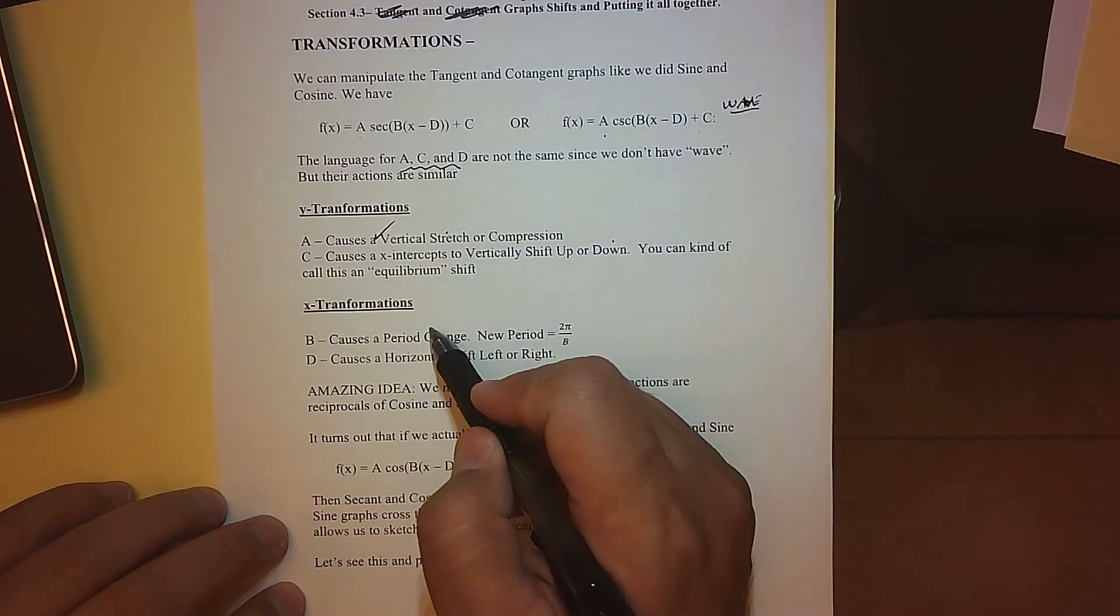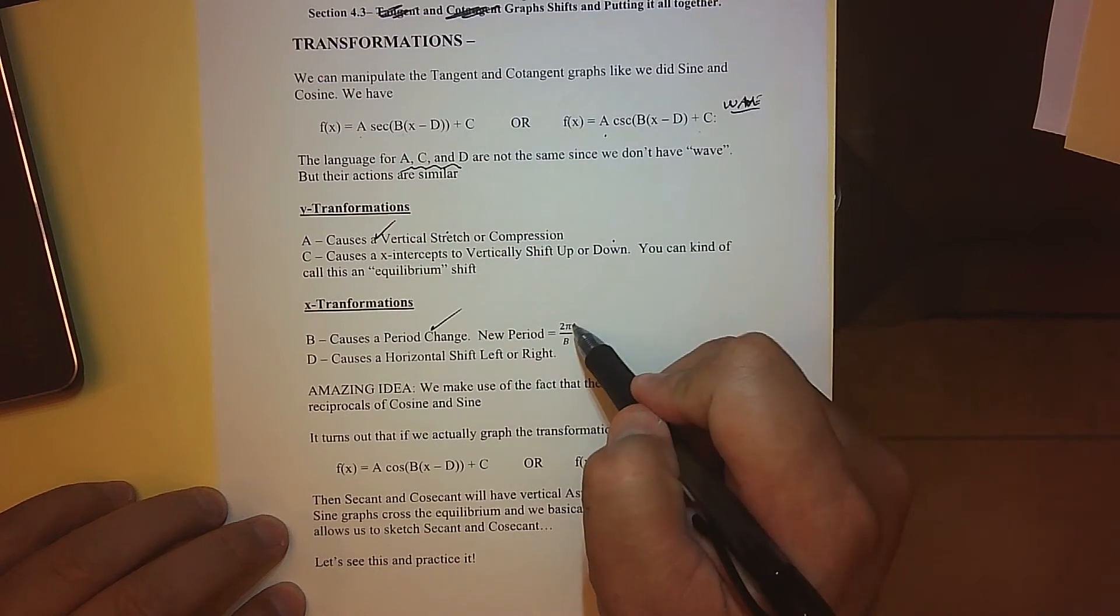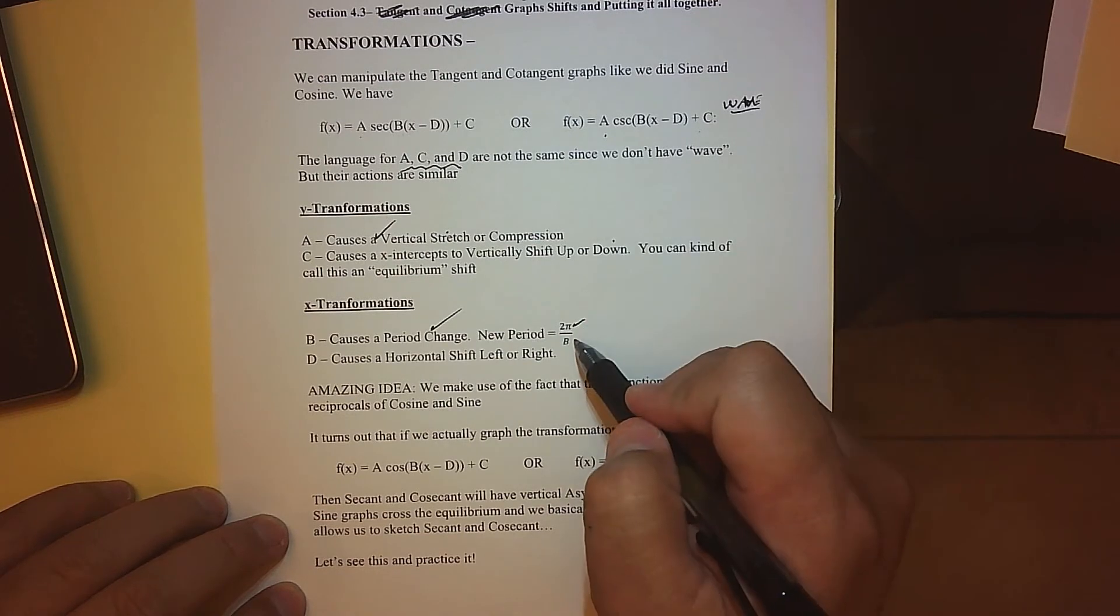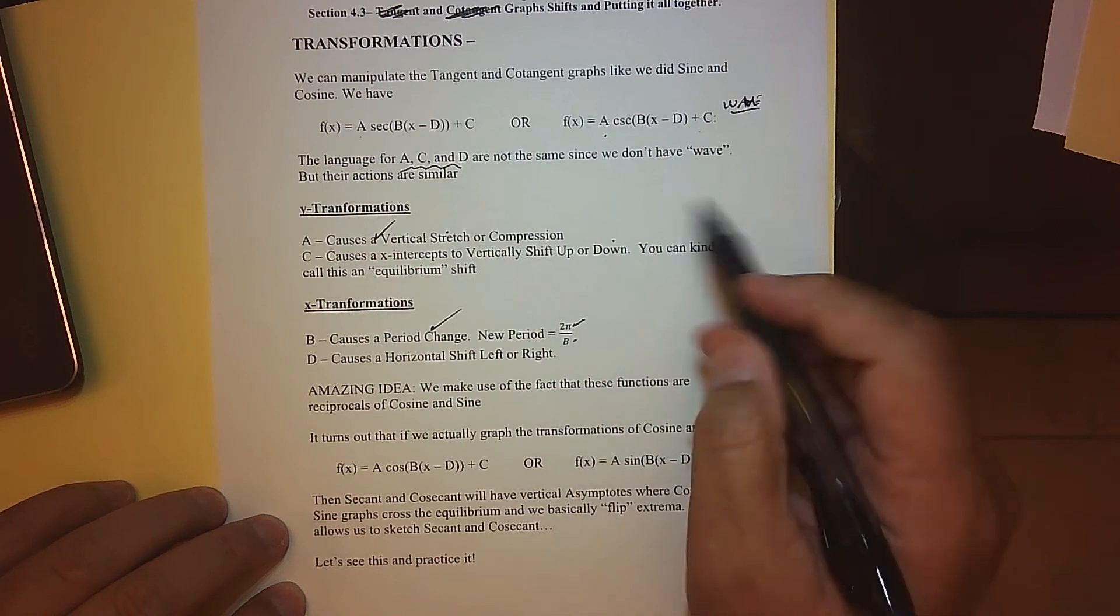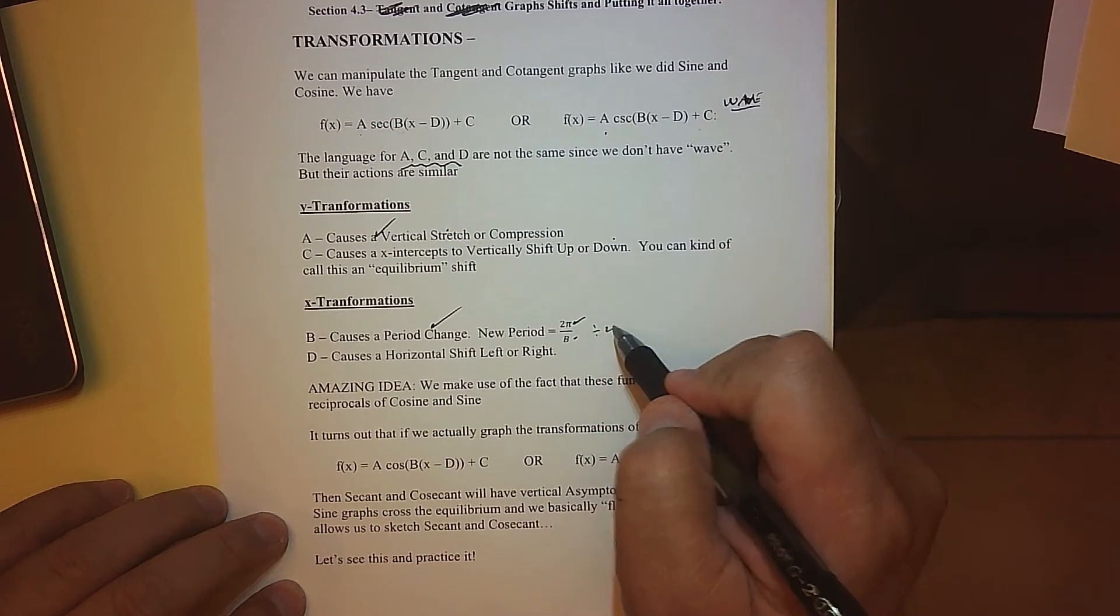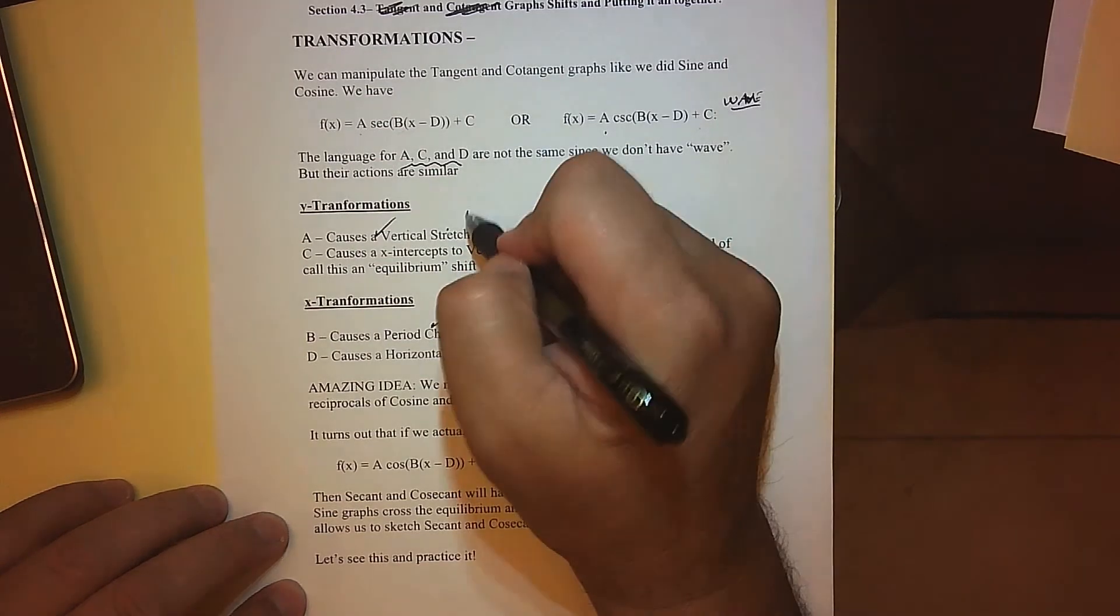B again causes a period change. We're back to a normal period of 2π, so one full rotation, and the new period is basically whatever b is divided into 2π. So we're going to do the same thing with all our x-values, divide them by b.